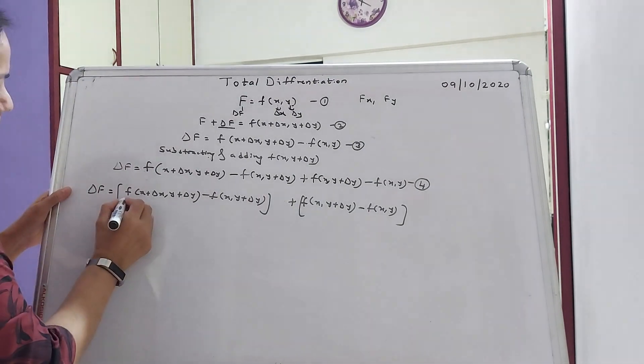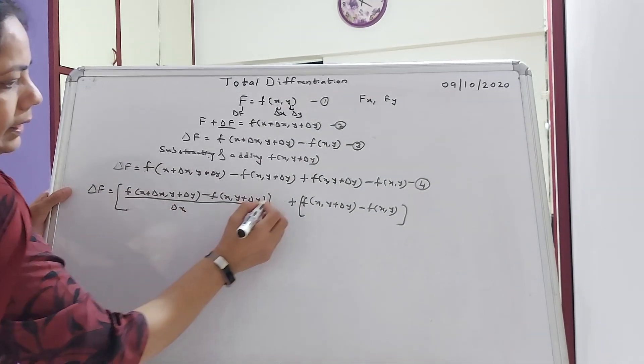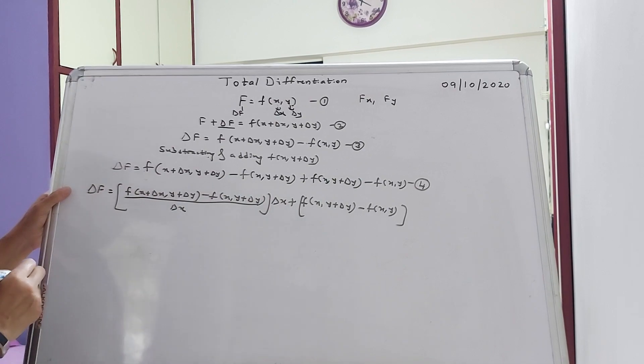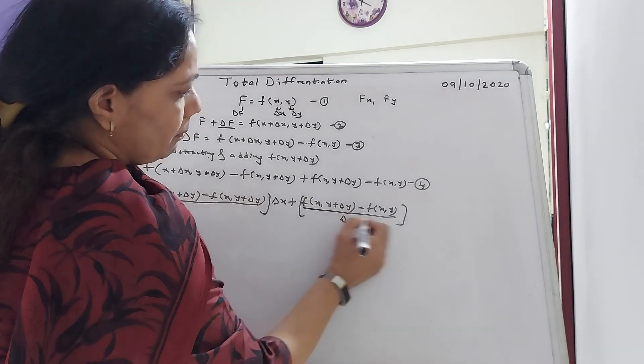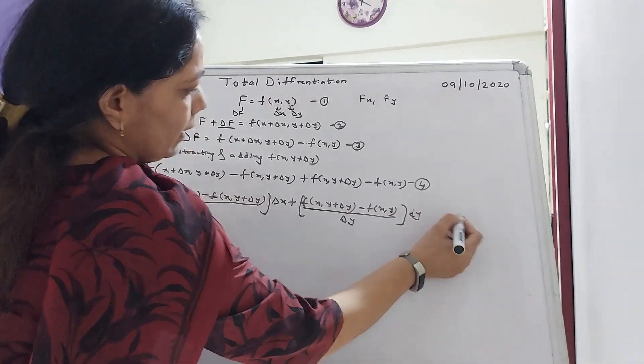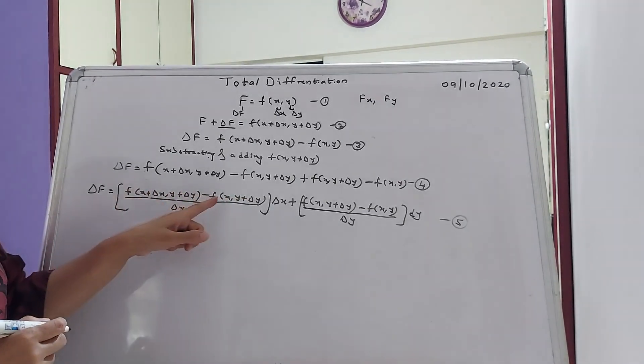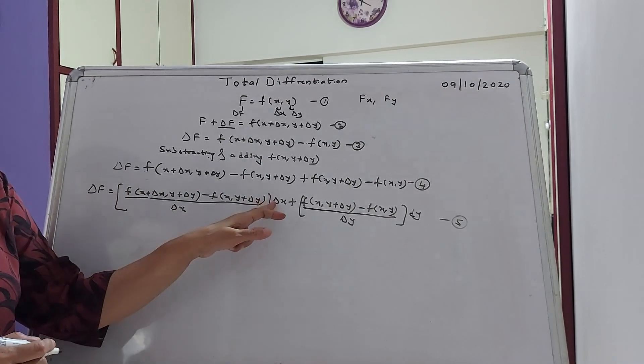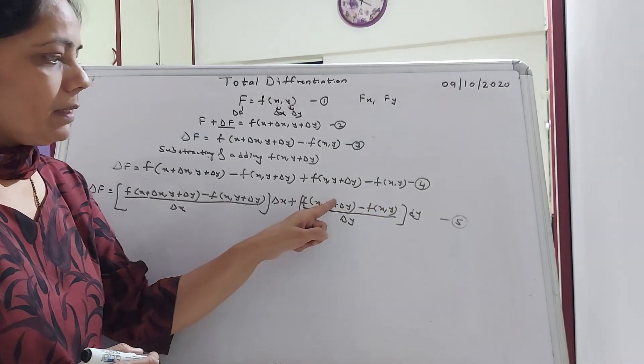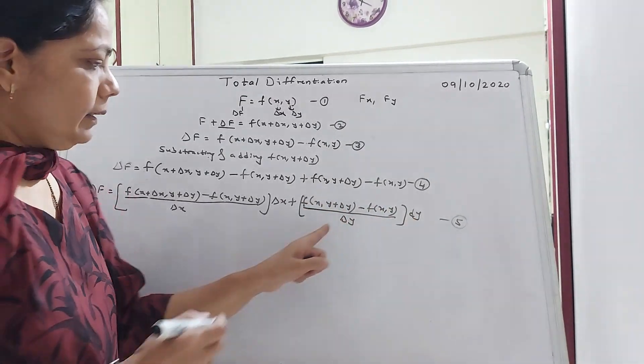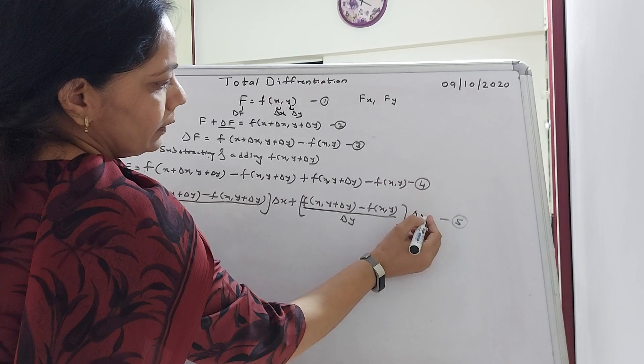Now to this term, I will divide by delta X and also multiply by delta X. Similarly to this term I will divide by delta Y and multiply by delta Y. Why delta X? Because in this case Y is constant but X is changing, X to X plus delta X, that's why divided by delta X, multiplied by delta X. In this case X is same but Y changing, Y to Y plus delta Y, therefore divide and multiply by delta Y here also, delta Y.